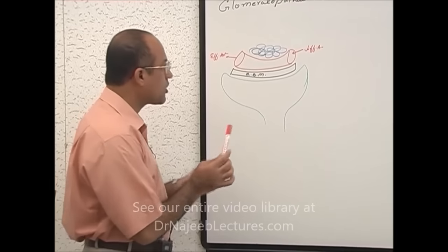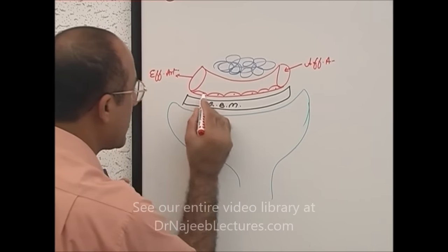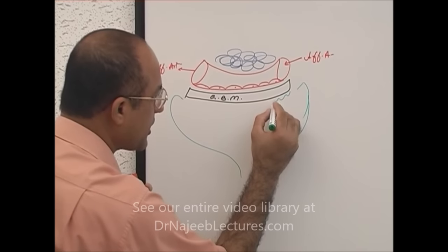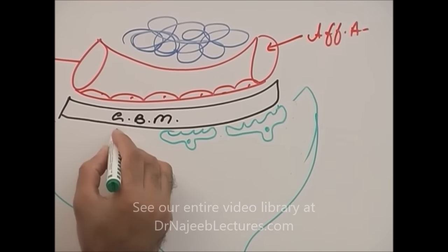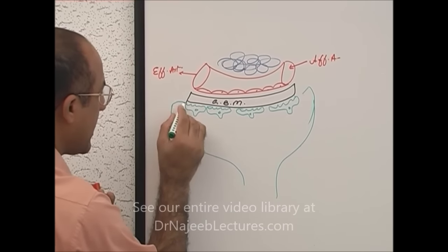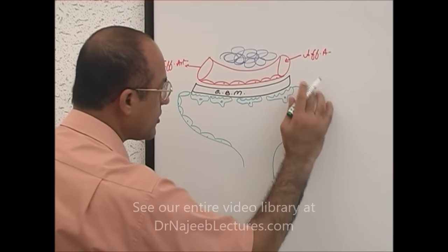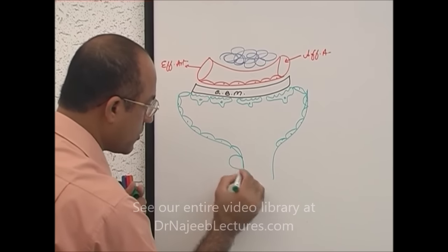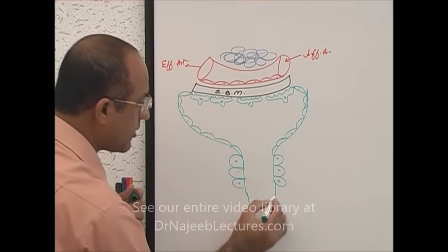The capillary is lined by endothelial cells. On the other side of the basement membrane are special cells called podocytes or epithelial cells — these are visceral epithelial cells. Here in the Bowman's space are parietal epithelial cells. And of course here is the beginning of the proximal convoluted tubule and the remaining nephron.